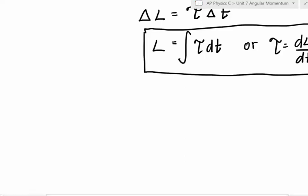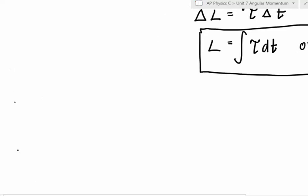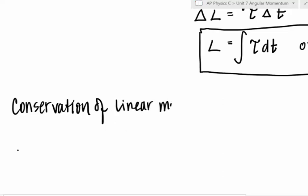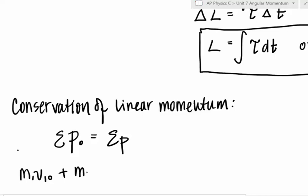Just like linear momentum can change, we can also look at the conservation of linear momentum first. Sometimes it's easier to draw those parallels. Do you remember the sum of all the initial momentum must be equal to the sum of all the final momentum? It was like M1V1 initial plus M2V2 initial is equal to M1V1 plus M2V2. Conservation of linear momentum.